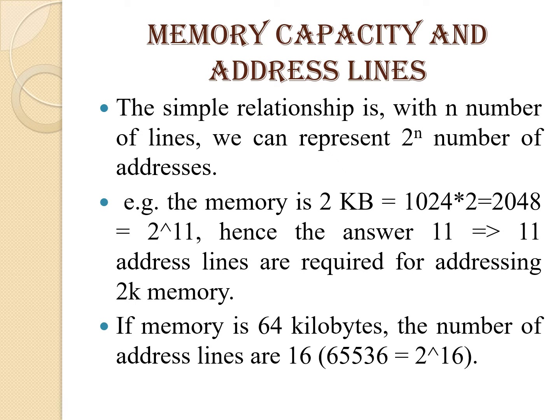Memory capacity and address lines: with n address lines, we can represent 2 raised to n addresses. For example, for 2KB memory: 1KB equals 1024, so 2KB equals 2048, which equals 2 to the power 11; hence 11 address lines are required. For 64KB memory, 16 address lines are required since 65536 equals 2 raised to 16.